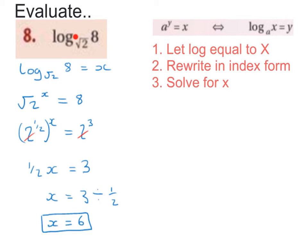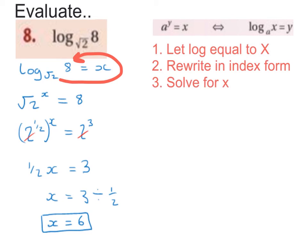Next I want to evaluate log base root 2, 8. Again, I'm going to let the log equal to x, so log base root 2, 8 is equal to x. Then I'm going to rewrite in index form and solve for x. Using my scorpion tail method, I start at root 2, which is the base, wrap my scorpion tail around the x, pass the equals, and end up at the 8. So root 2 to the power of x is equal to 8.